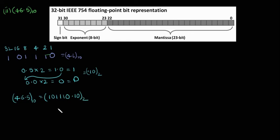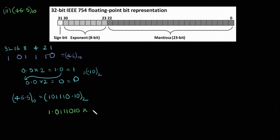Now let us normalize this number. Moving the binary point, we get 1.011101 times 2 power — we count 1, 2, 3, 4, 5 shifts towards the binary point — so 2 power 5. This is the normalized form.